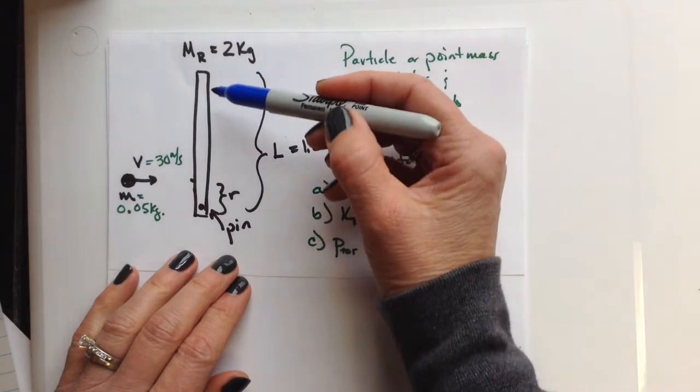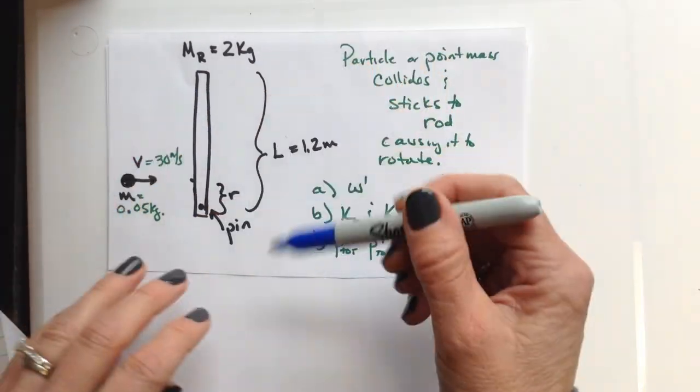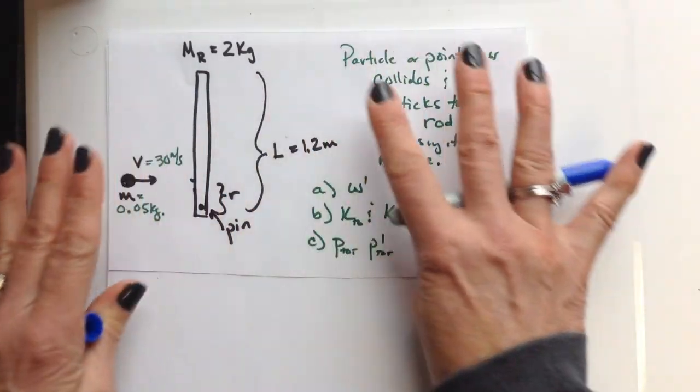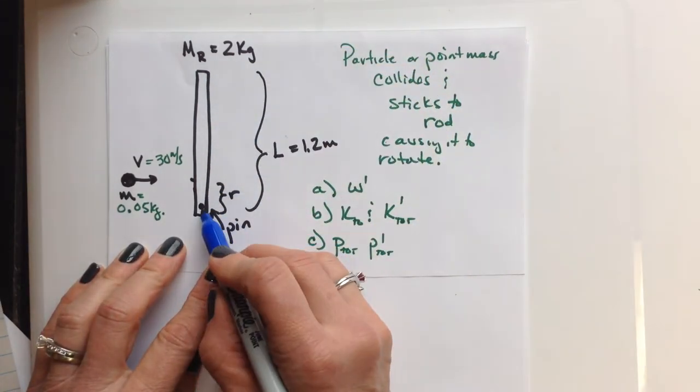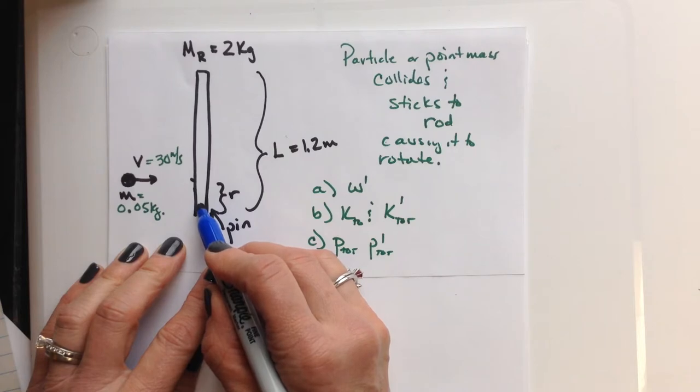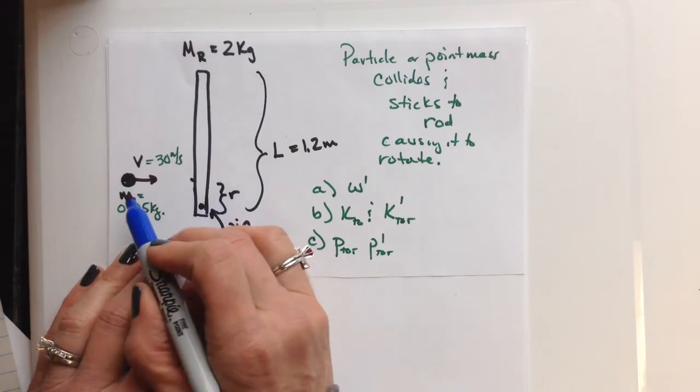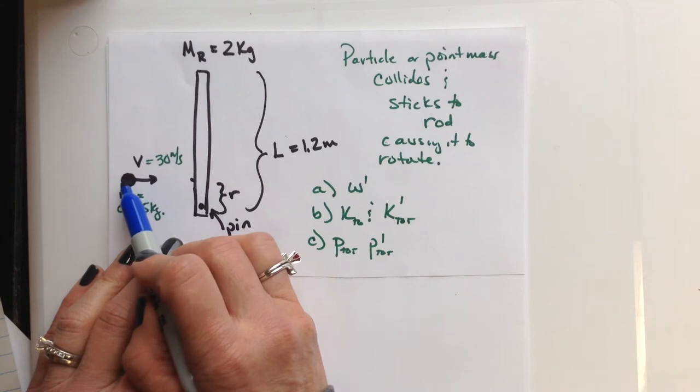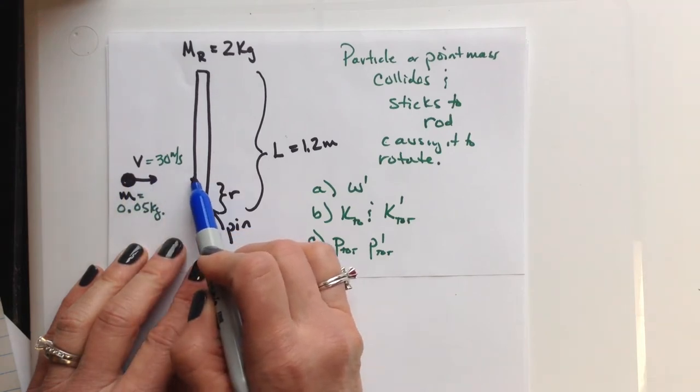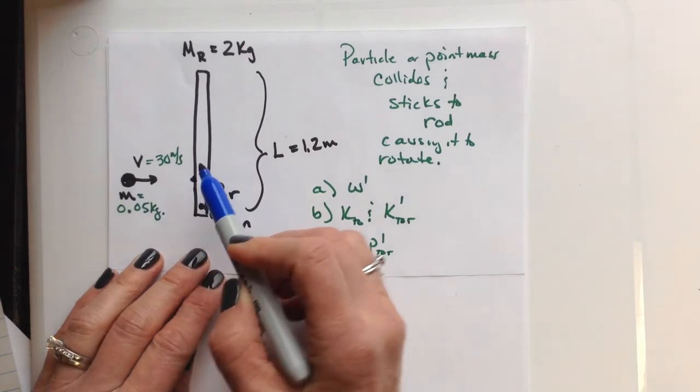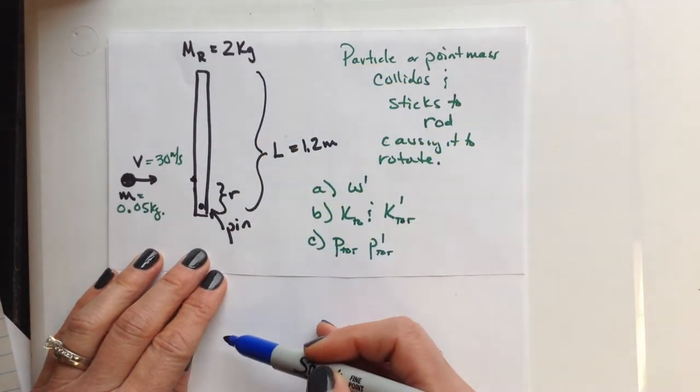Basically what we're looking at is we have a top-down view of a frictionless surface that has some kind of stick or rod here that has a pin that fixes it to the floor or the surface of the table. And then over here we have some point mass that is moving linearly at some velocity that's given that is going to collide and stick to the end of the rod, which causes the rod to rotate.